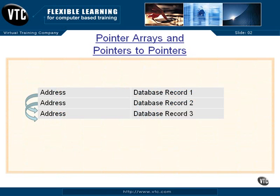Here are three database records. There are addresses in the left column, and on the right column are the database records. All you have to do is go through and compare the various columns in the database records — whether it's a state, a last name, first name, a price of something, whatever you're looking for — and then when you find two that are out of sequence, you switch the contents of the addresses in the array on the left side. Those are all pointer arrays. By switching those values around, you can actually resort the database table without sorting the database table.